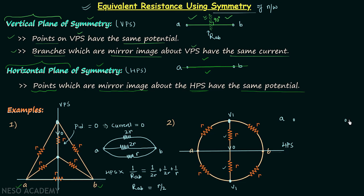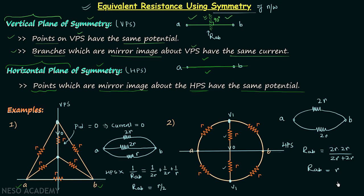Between A and B we have one resistor of value 2R connected in parallel with another resistor of value 2R. The equivalent resistance equals 2R × 2R divided by (2R + 2R). When you solve this you get R as the answer. A helpful simplification tip: whenever two resistors of the same value are connected in parallel, the equivalent resistance is simply half the value of either resistor — so 2R divided by 2 equals R.